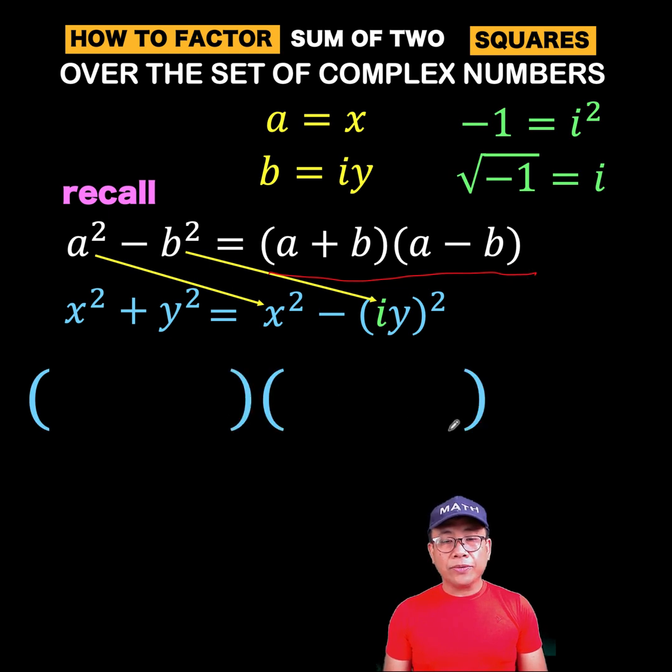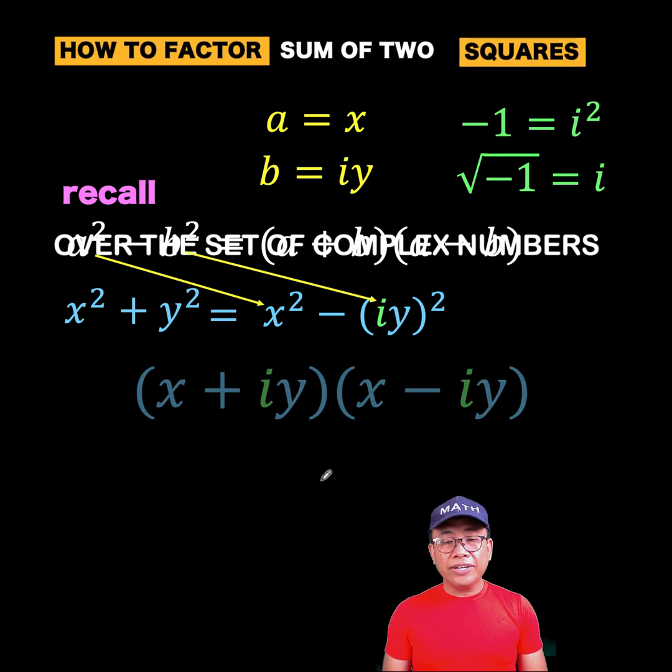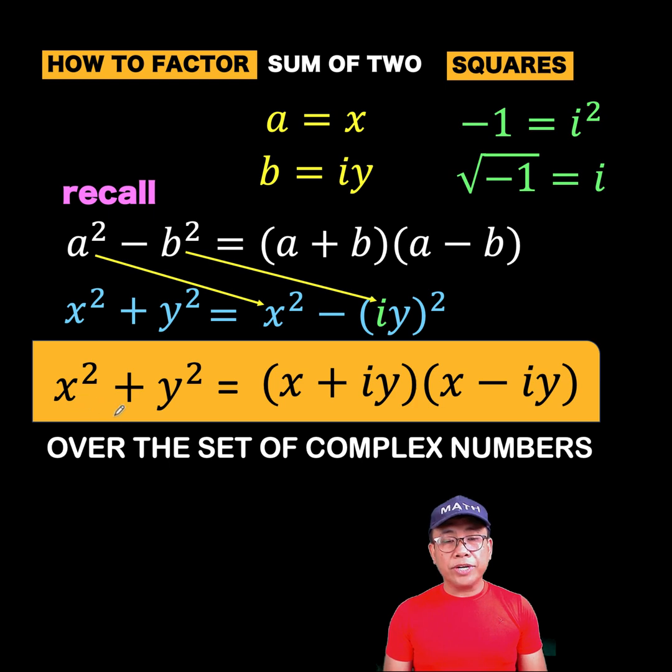So that is equal to the quantity a plus b, where our a is x and b is i y, times the quantity a minus b, where our a is x and our b is i y. So we have here minus i y. And this is now the factored form of x squared plus y squared over the set of complex numbers.